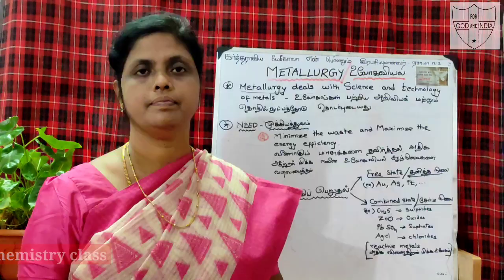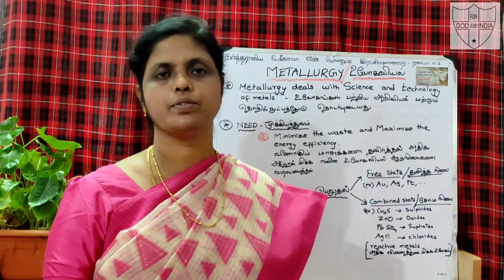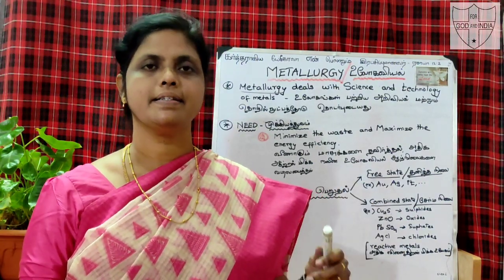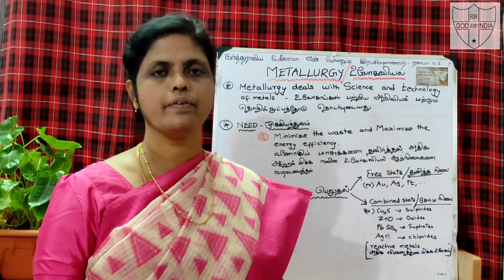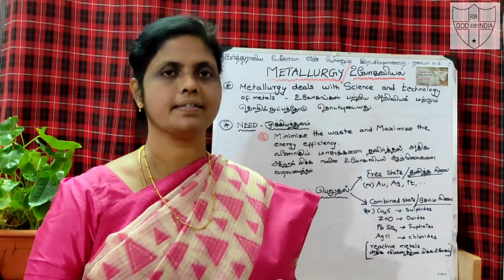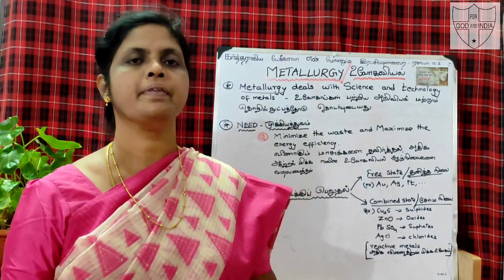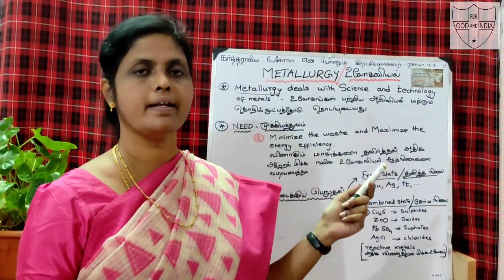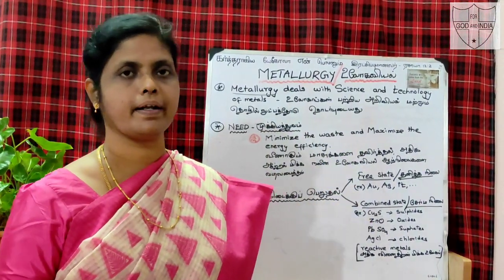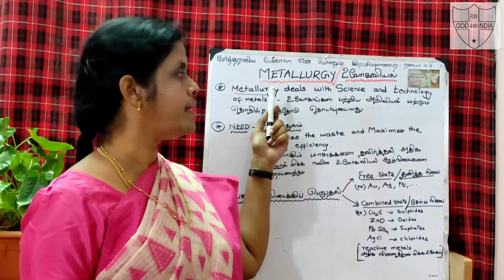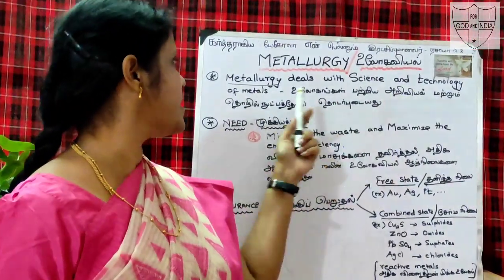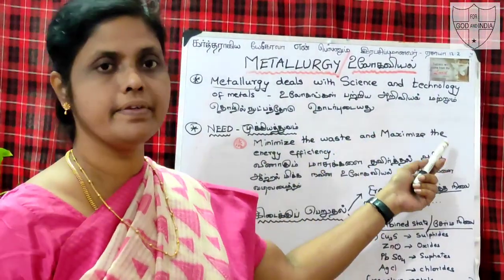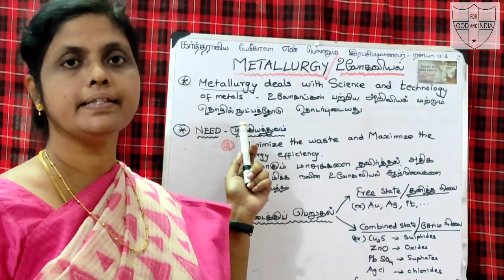Let us start. Now, the first lesson is Metallurgy. Metallurgy is the first lesson. We will learn the first lesson. Metallurgy deals with the science and technology of metals. Civilization is the first context — that is the first one.